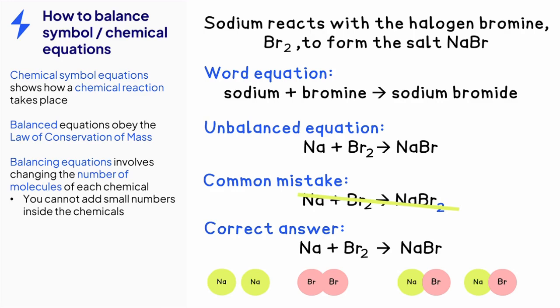Overall, we have a balanced chemical symbol equation with two atoms of sodium, reacting with one bromine molecule to form two sodium bromide molecules. Drawing out the molecules helps visualize the balancing process.